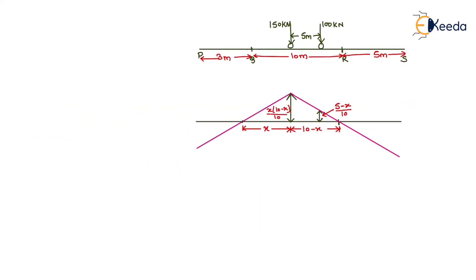We have a beam PQRS with simple supports at Q and R. PQ and RS are the overhang portions. To determine the maximum sagging moment under the 150 kN load, we know the sagging moment will lie in span QR only.